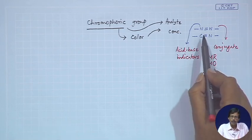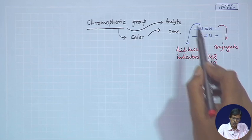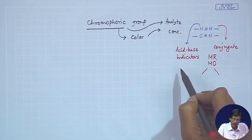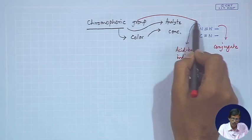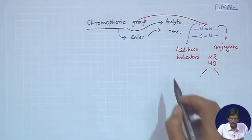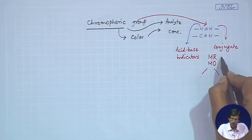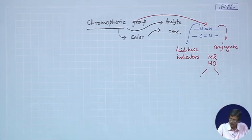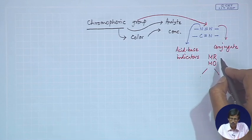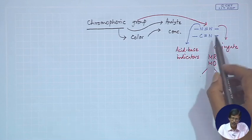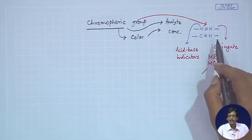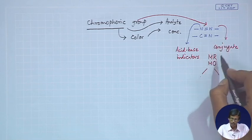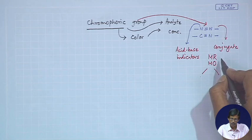The azo function, along with conjugation variation in the benzenoid or quinonoid part — as seen in methyl red and methyl orange, where the only variation is their substitutions — gives a long range of color variations from red to yellow or orange to yellow, one in the acid form and the other in the basic form.